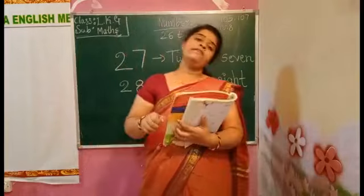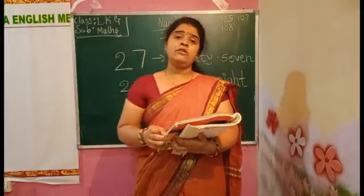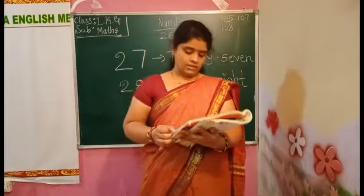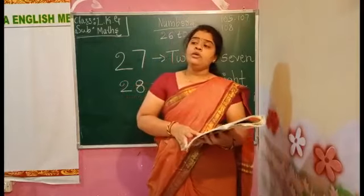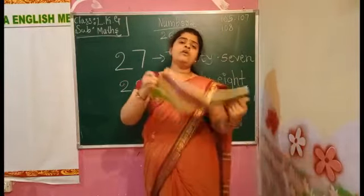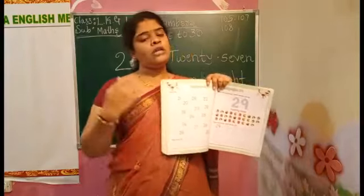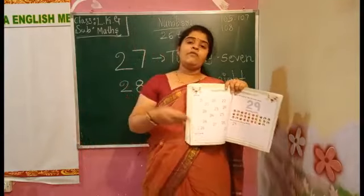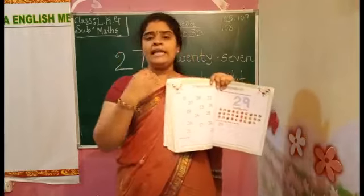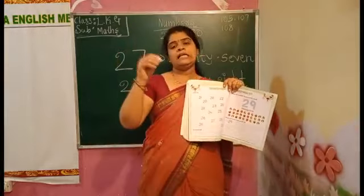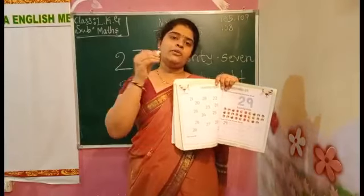Once again, you have to count the given balls. How many balls are you getting here? Below they are given a dotted 28 number — you have to trace that number and complete the columns. Backside, once again, they are given. You already did this type from 11 to 27, so you have got that idea. How many balls are there? We have to circle the number 28.